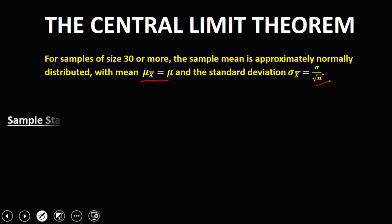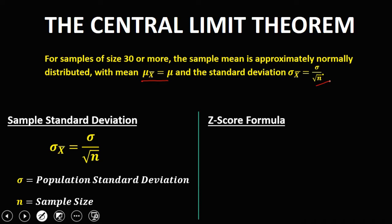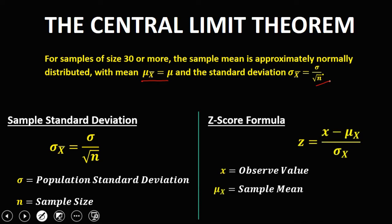These are the formulas to remember. The sample standard deviation equals the population standard deviation divided by the square root of the sample size. For the Z-score formula, it is the observed value minus the sample mean (or population mean), divided by the sample standard deviation.